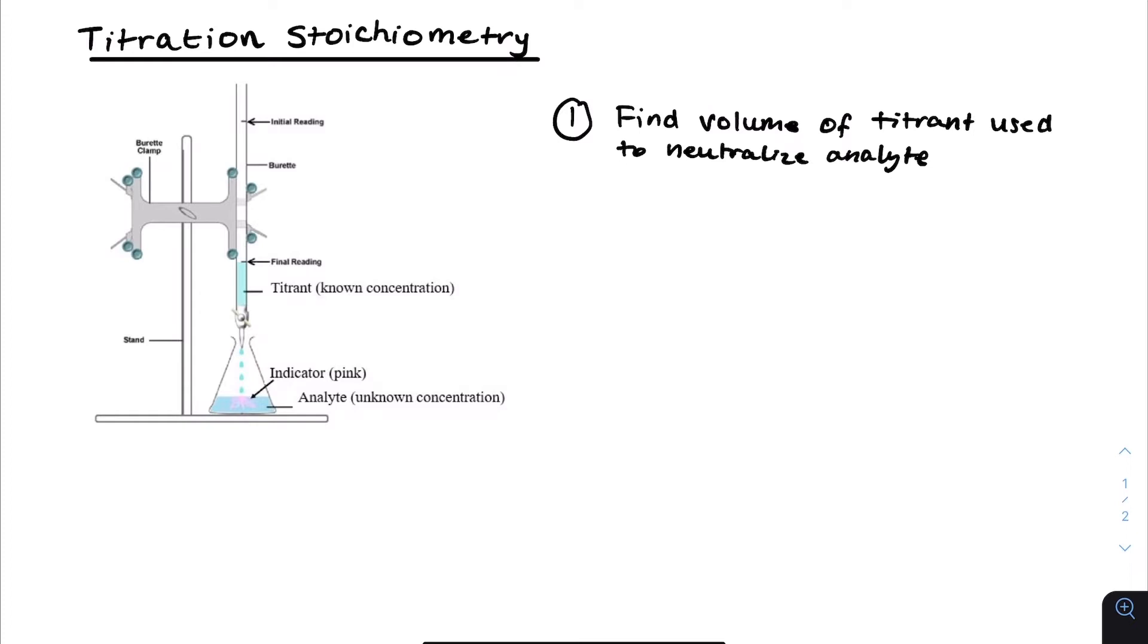You find the volumes of titrant used to neutralize the analyte, which can be detected by a color change in the indicator. That's why it's always good to do a rough titration in the beginning to get a sense of how much titrant should be used. Then next time you do it, you should go much more slowly when you're approaching that value, and then you can get a more precise amount. You should continue to swirl the conical flask as the titrant is being added drop by drop, because then it's easier to see the color change and the titrant is being mixed appropriately with the analyte.